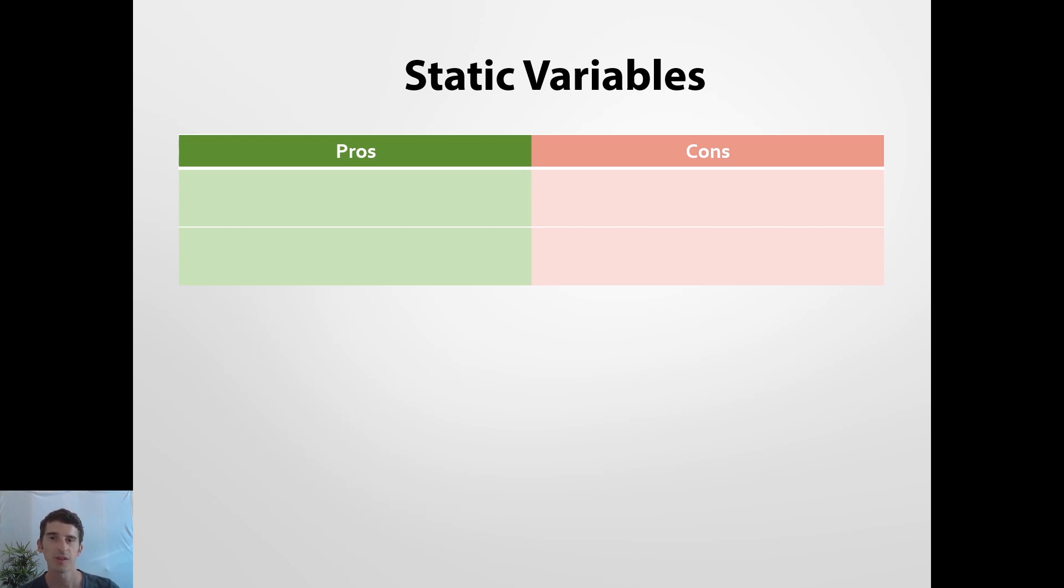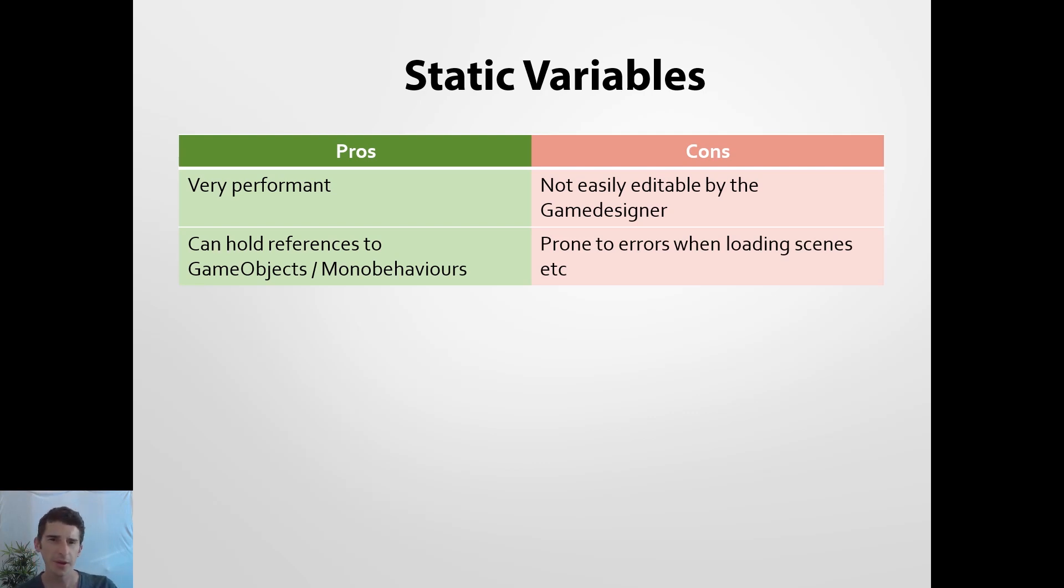But static variables also have their downsides. So let's look at the pros and the cons of static variables. They're also very fast. They're almost as fast as constant variables. However, compared to constant variables, they've got the huge advantage that they can store references to objects like game objects and mono behaviors, which is very important in Unity. But they still have one major problem. They're not very easily editable by the game designer. Just like constants, he needs to open the script in order to change them. And the second disadvantage is that they are quite prone to errors when loading new scenes, because if you load a new scene, they are not reset automatically. You need to do this on your own. And it's just a source of errors if you're not careful in your programming.